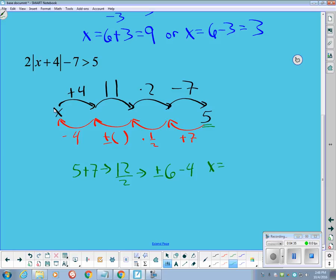And that gets us all the way back to x. So x is either 6 minus 4, which is 2, or x is equal to negative 6 minus 4, which is negative 10.